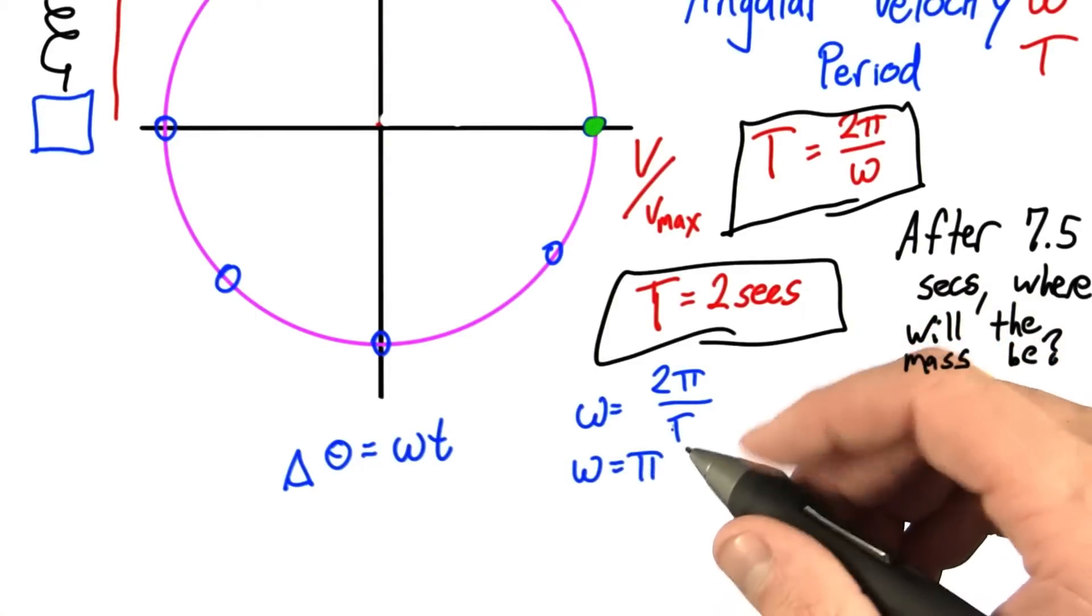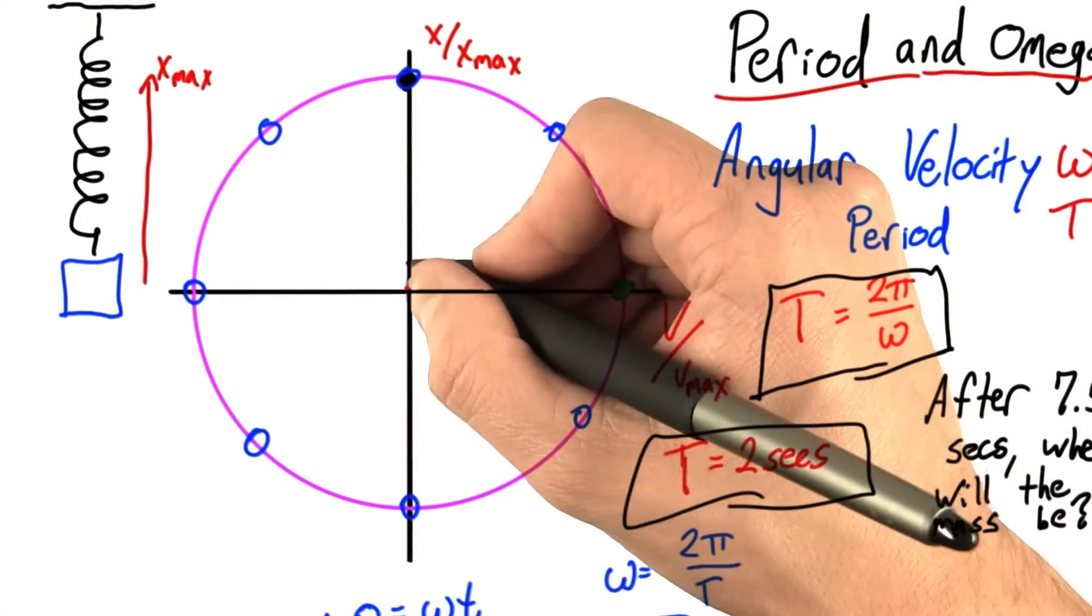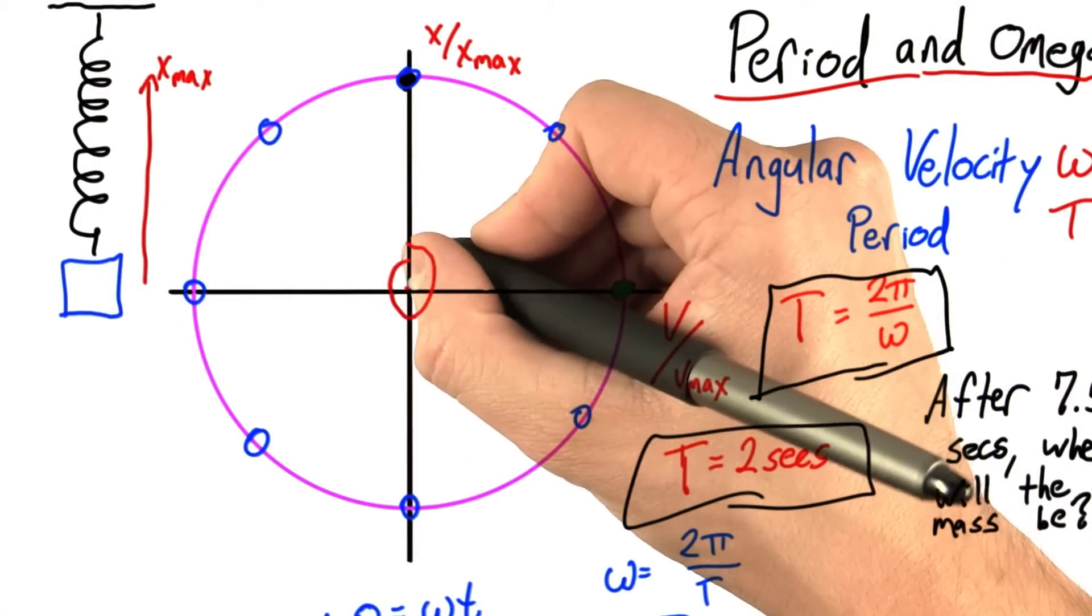That means in each second, it's going to go π radians. 7π radians would be 7 halves of a circle. So starting from here, that would be this angle: 1 half, 2, 3,